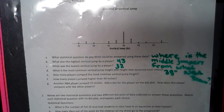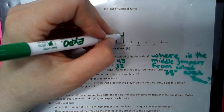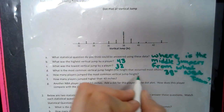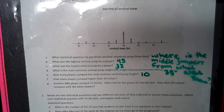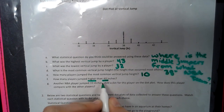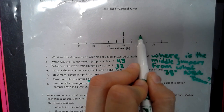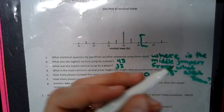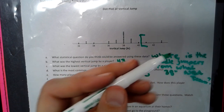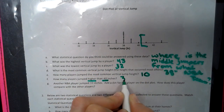How many players jump the most common vertical jump? We take the information we just had from 38 and see how many players actually jump that — we literally go up and count, and we get 10. How many players jumped higher than 40 inches? Higher than 40 means we cannot include 40 itself. We count those dots: there's one at 41 and two at 43, so that would be a total of three.